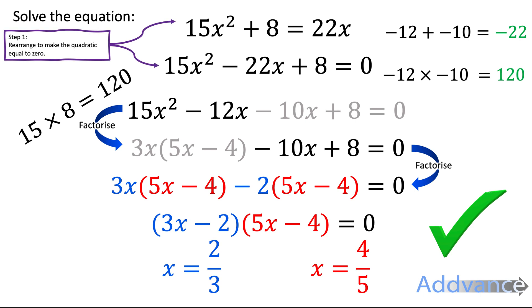Step one, we need to rearrange the quadratic to be equal to zero. Because to solve quadratics, we always need to have it equal to zero. Step two, we're going to multiply the first and last numbers of the quadratic. We multiply the 15 and the 8 together to make 120. And we look for two numbers that add to make the middle number and multiply to make this multiple. So two numbers that add to make minus 22 and multiply to make 120. Those two numbers were minus 12 and minus 10.